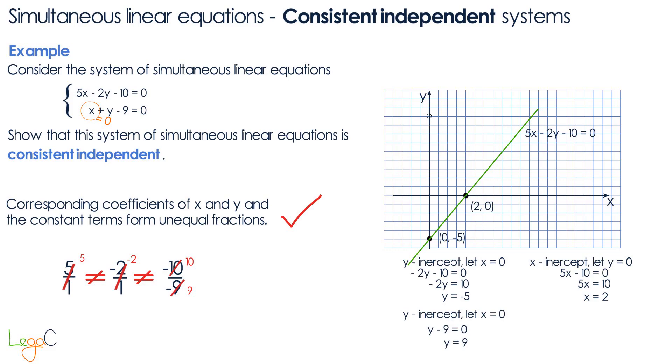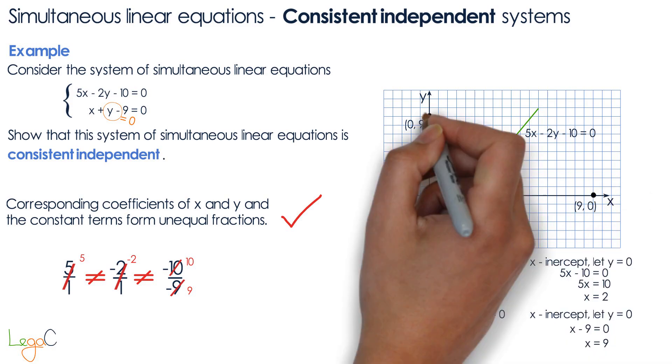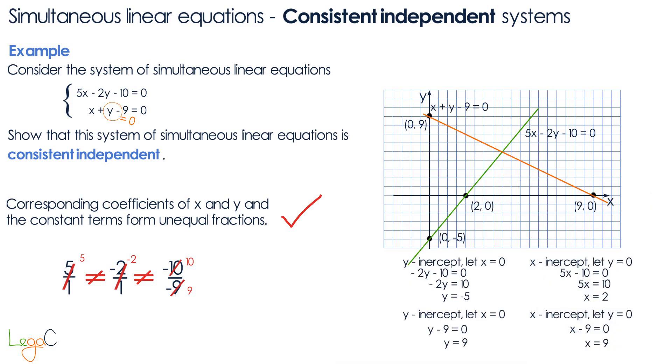The intercept has coordinates 0 and 9 and then we do the x-intercept by letting y equals 0. So we end up with x minus 9 equals 0 so the x-intercept is 9 and 0. We draw the line and we label the graph. Notice how the point of intersection is 4 and 5 so consistent independent systems have one point of intersection. One unique solution.